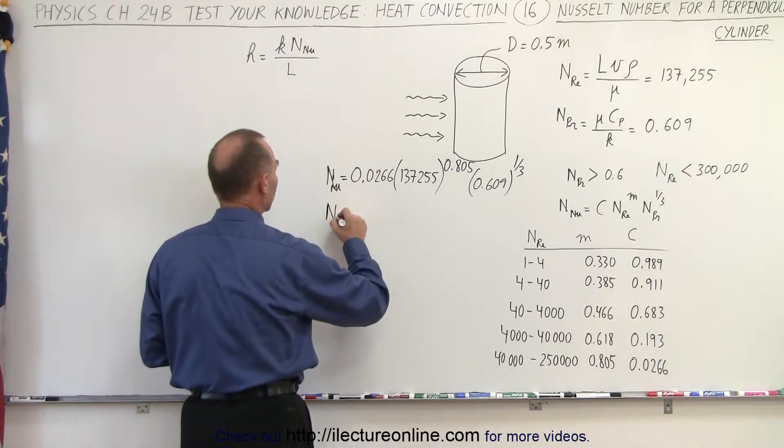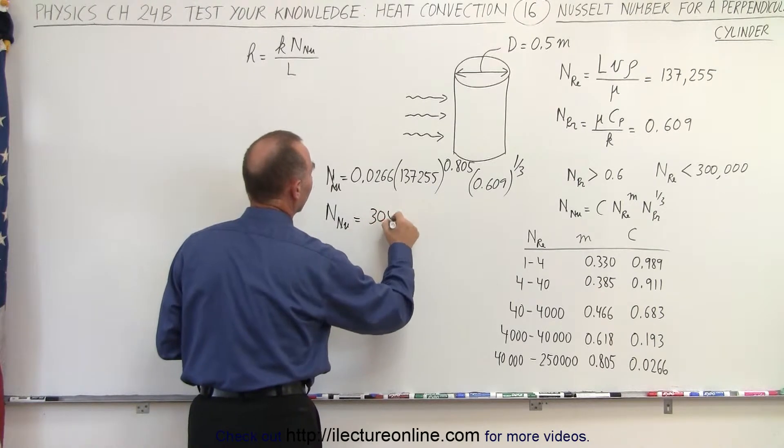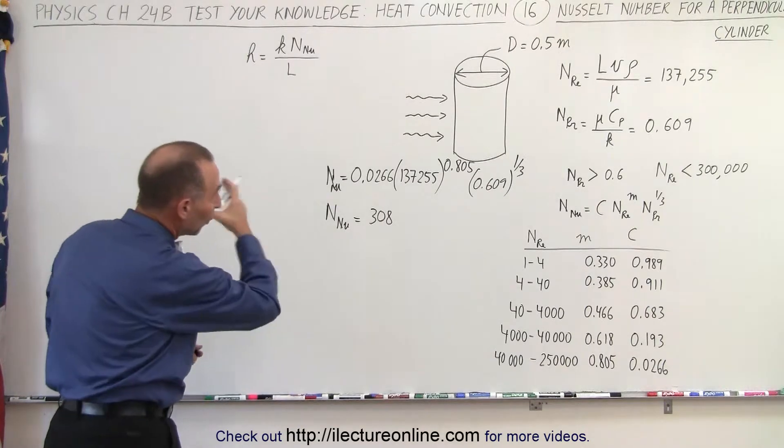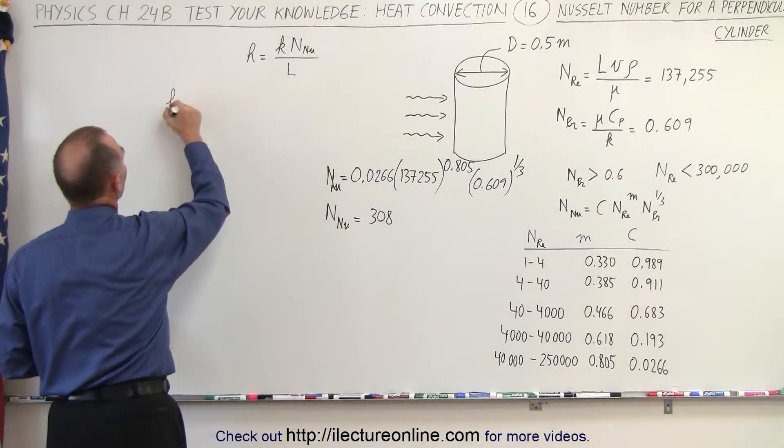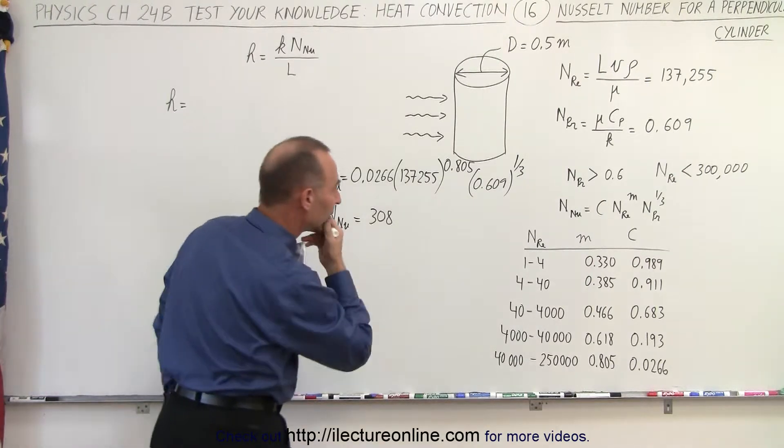So we have a Nusselt number here, which is equal to 308. And then we plug that into our equation here to find a transmission coefficient with that kind of airflow. So H is equal to K, and we have a value for K.